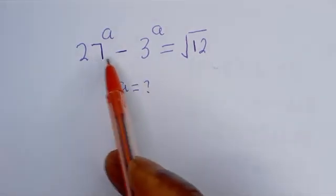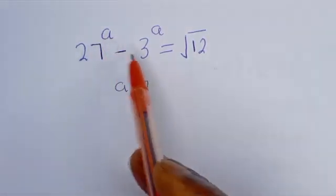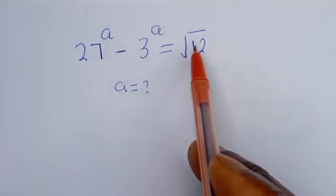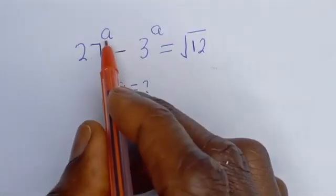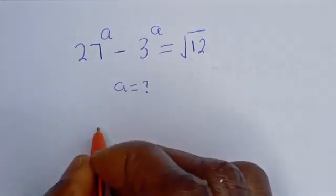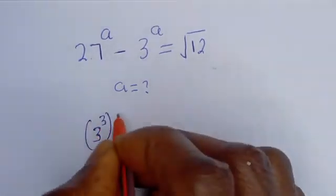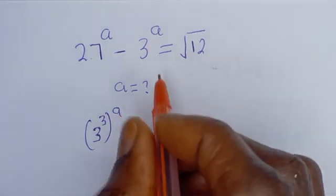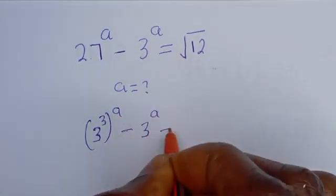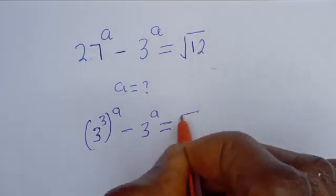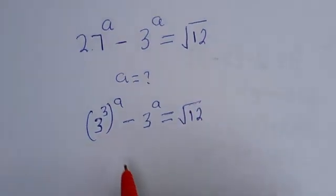Hello, you are welcome. We are going to solve for a in this equation: 27 to the power of a minus 3 to the power of a is equal to the square root of 12. Here we have 27 to the power of a.